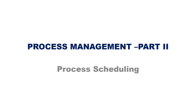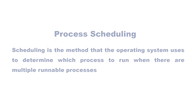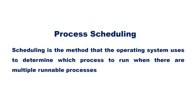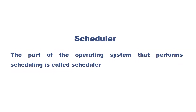In this video, let us discuss about process scheduling. Scheduling is the method that the operating system uses to determine which process to run when there are multiple runnable processes. The part of the operating system that performs scheduling is called the scheduler.